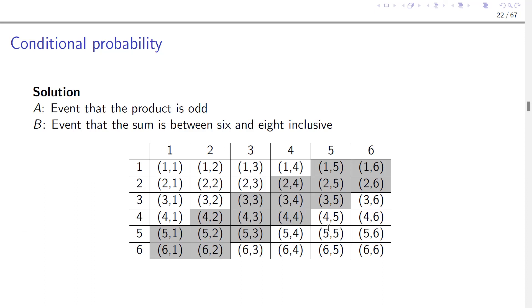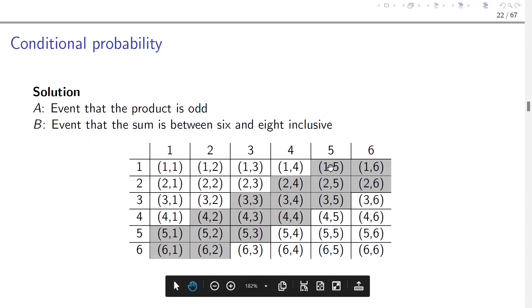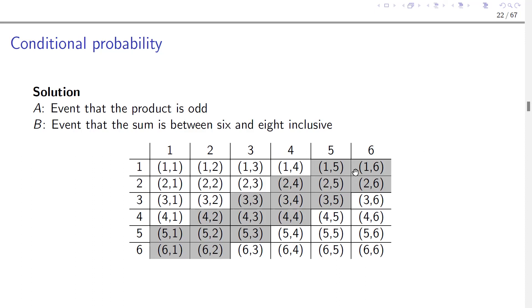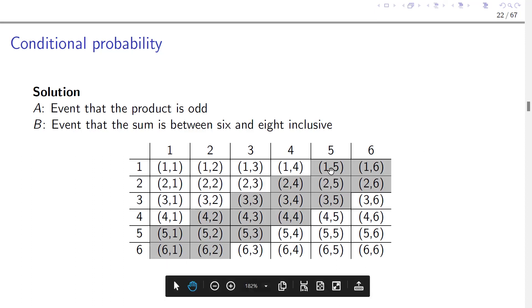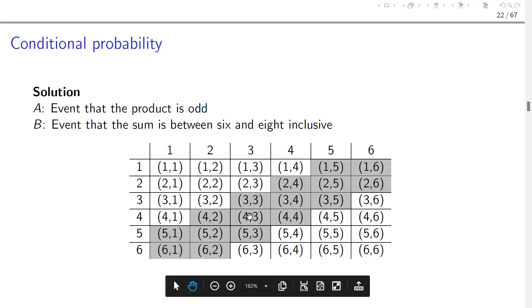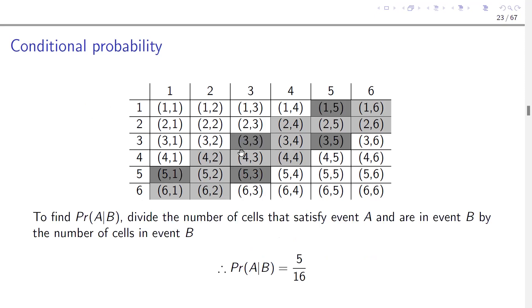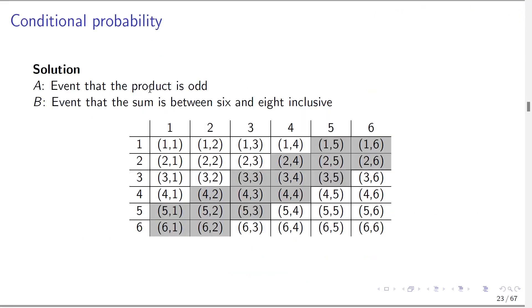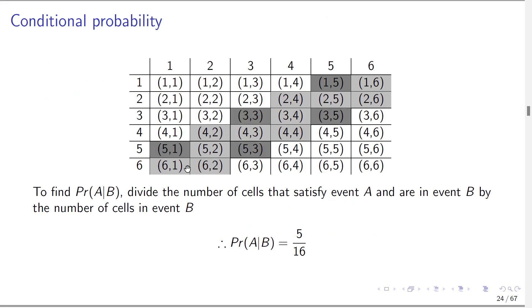We are looking for the new sample space, which is event B, because we are conditioning on that event. Out of this new sample space, what is the probability that the product is odd? For example, one times five is five — an odd number. But one times six is six — an even number, so it doesn't qualify. The outcomes where the product is odd are counted, and there are six such outcomes out of the sixteen total outcomes in the new sample space.